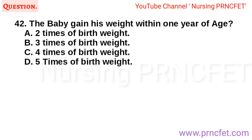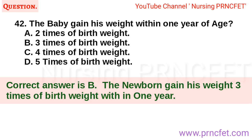Question 42: The baby gains his weight within one year of age: A. Two times birth weight. B. Three times birth weight. C. Four times birth weight. D. Five times birth weight. Correct answer is B. The newborn gains his weight three times the birth weight within one year.